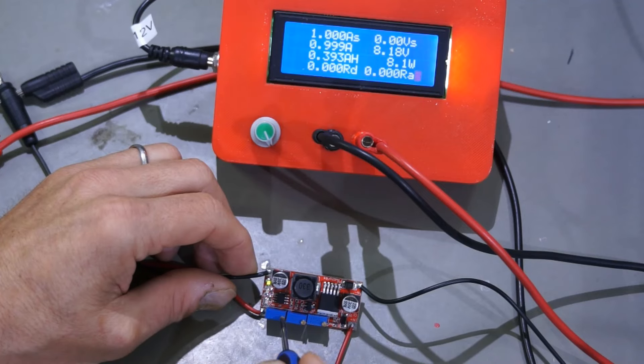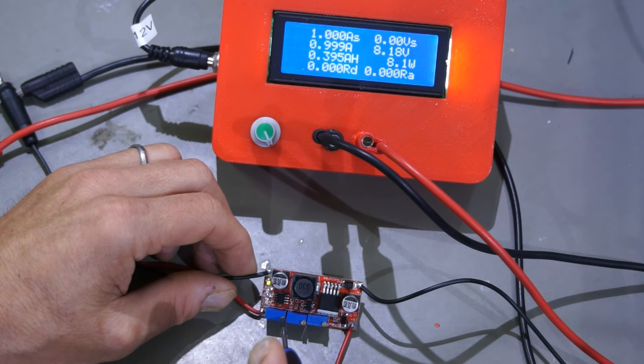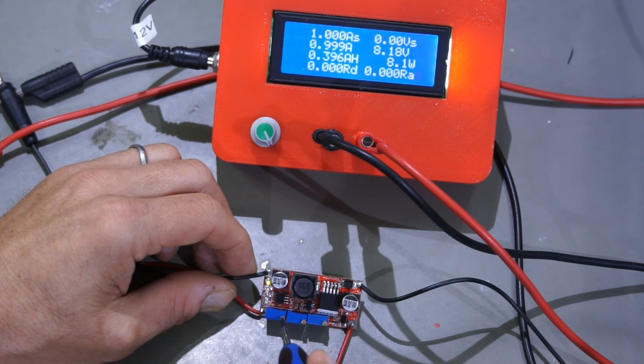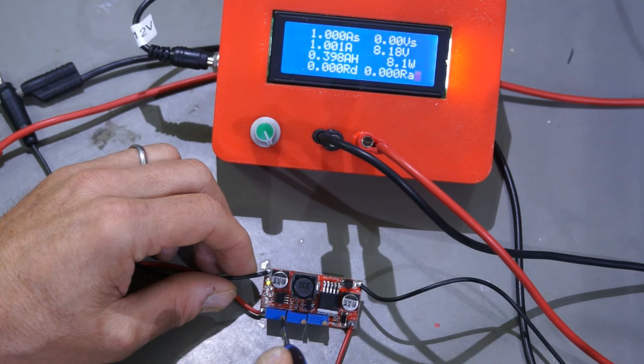First, I adjust the voltage to 8.2 volts. Then I set the load to 1000 mA and with the left trimmer, I try to find the point where the current limitation starts. As soon as current limitation begins, one red LED starts to glow.